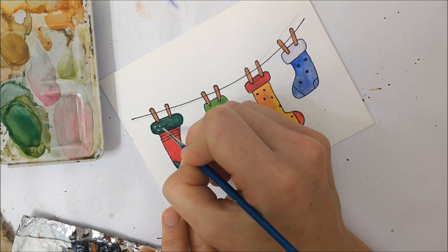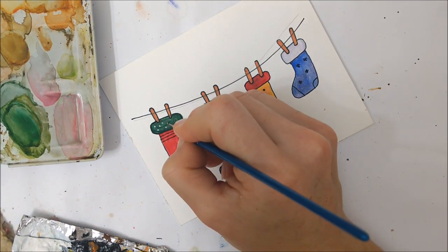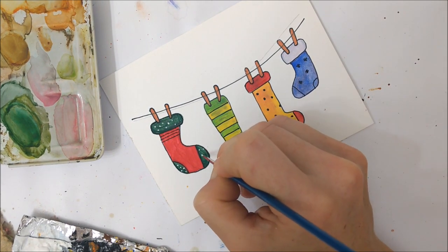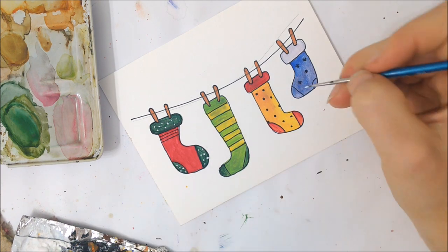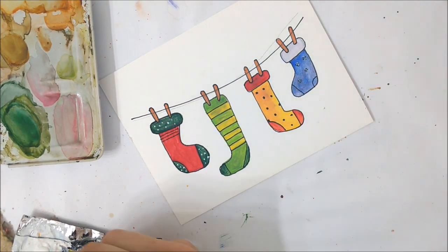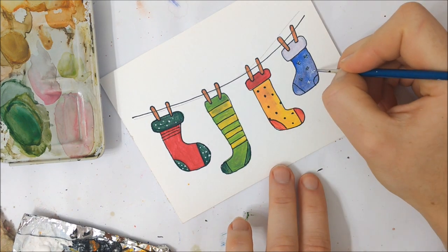Finally, you can take some white acrylic paint and add some additional details. I added some dots, lines, and snowflakes on some of my stockings. This is definitely optional, but I like that it adds another level of detail.